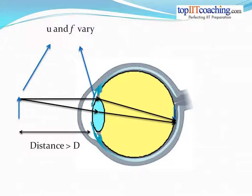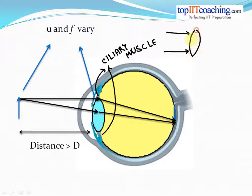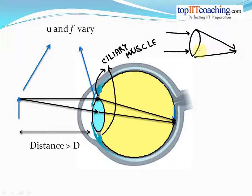Now, how does the focal length of the eye vary? There are muscles called ciliary muscles. These muscles contract or expand to change the focal length of the eye lens. So when the object is far away, the rays on the eye lens fall parallel to the principal axis, and a very big focal length will also do. A lens with less power will also do, because then you don't have to really make an effort to converge the rays. So the focal length when the object is at infinity is high. When the object comes closer and closer to the lens, the lens has to become stronger and more powerful, and when the lens has greater power, it has lesser focal length because it converges rays faster.